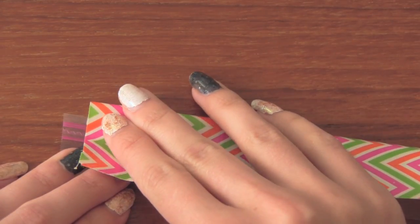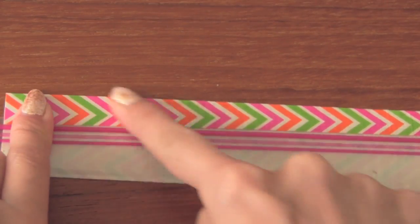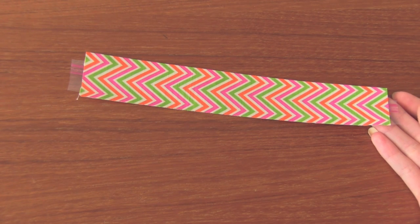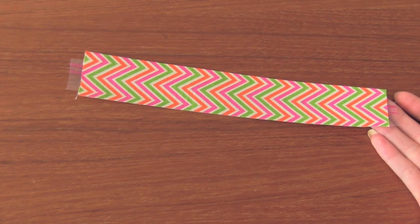Take that entire thing and flip it over. Then you're going to fold the tape down onto the other side. Now your piece will look like this and you're going to repeat this exact same thing on the other half of the ziplock.